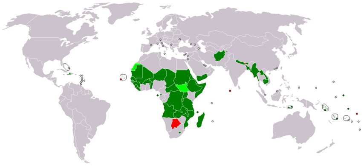Renewable energy can be particularly suitable for developing countries. In rural and remote areas, transmission and distribution of energy generated from fossil fuels can be difficult and expensive, and producing renewable energy locally can offer a viable alternative. Renewable energy can directly contribute to poverty alleviation by providing energy for creating businesses and employment, as well as for cooking, space heating, and lighting. Kenya is the world leader in the number of solar power systems installed per capita.